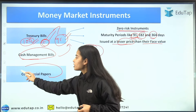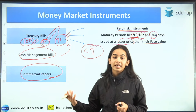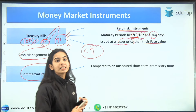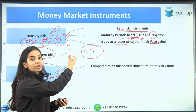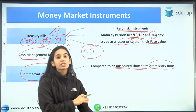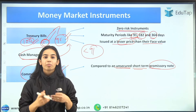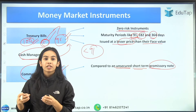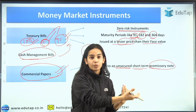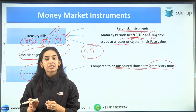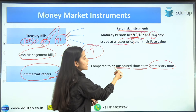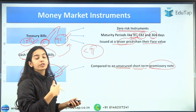Next is commercial paper. Commercial means they are issued by the corporates — by companies, financial institutions, or primary dealers. Compared to treasury bills, they are unsecured. It is a short-term promissory note, where the company is promising the person giving the money that it will return the loan. So it is a promissory note by the company that has taken the loan, and compared to treasury bills, they are more unsecured.